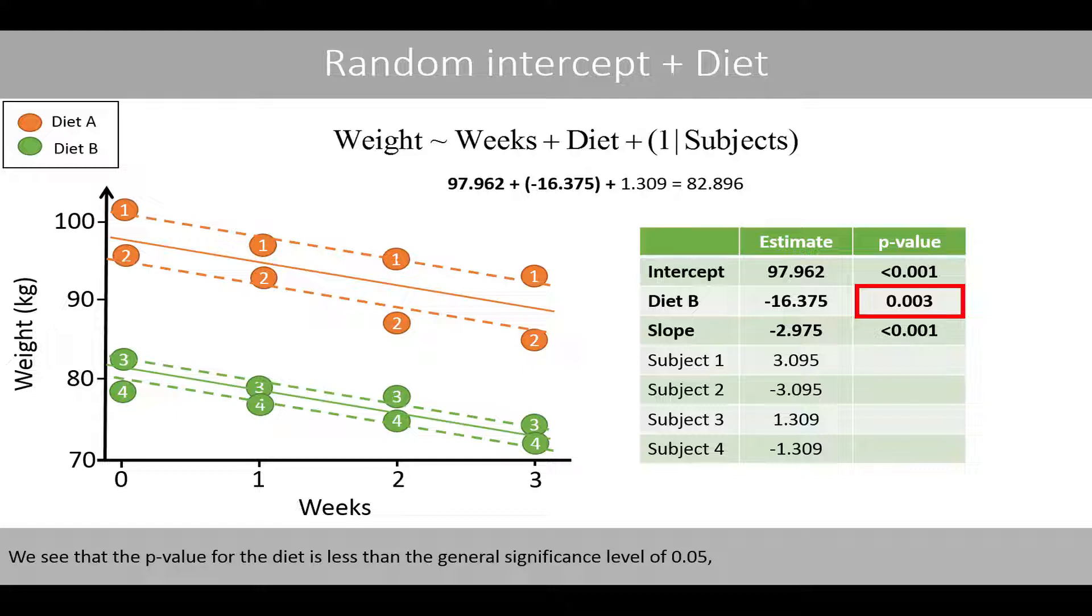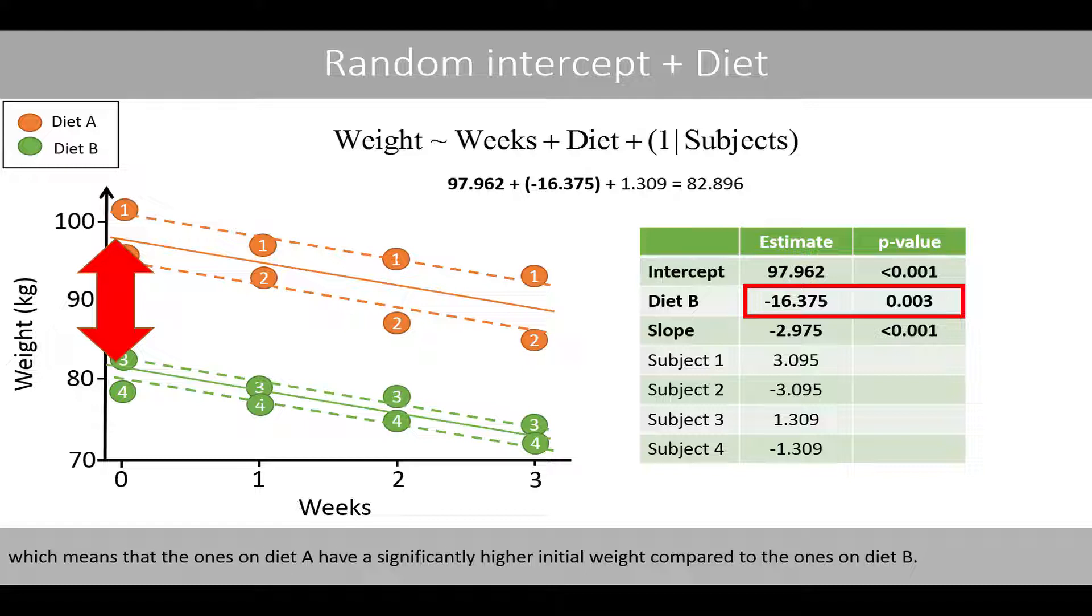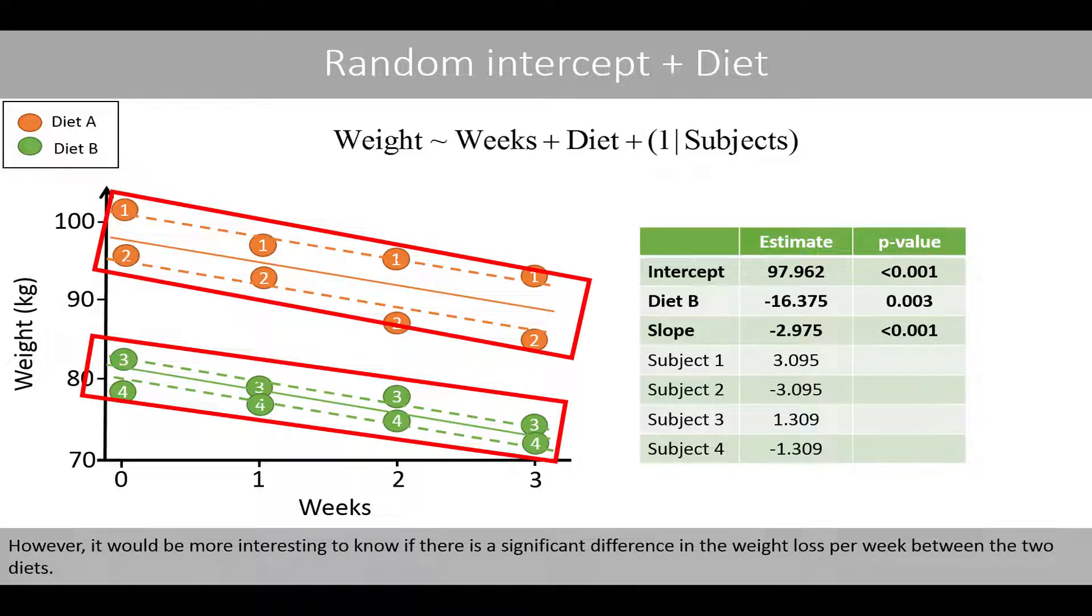We see that the p-value for the diet is less than the general significance level of 0.05, which means that the ones on diet A have a significantly higher initial weight compared to the ones on diet B. However, it will be more interesting to see if there is a significant difference in the weight loss per week between the two diets.